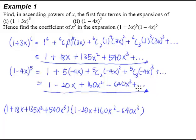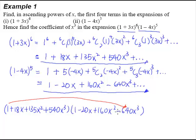We can forget about the dot dot dot, because we're only interested in the x³ term. When we multiply the two expansions, how do we get x³? This 1 multiplied by the -640x³ gives x³. This 18x multiplied by 160x² gives x³. This 135x² multiplied by -20x gives x³. And 540x³ multiplied by 1 gives another x³. So we have a number of x³ terms.